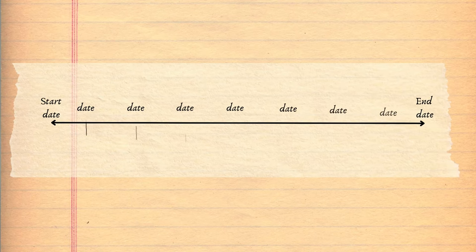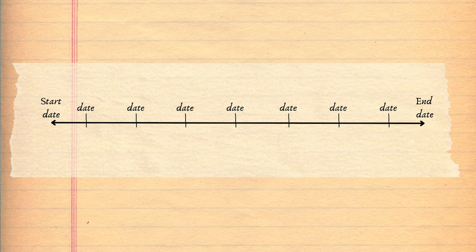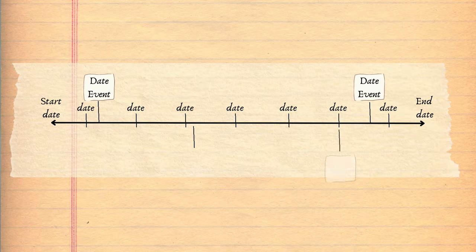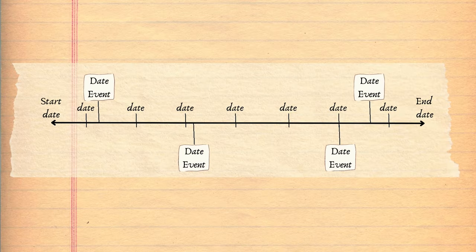The basics of timelines are that they read from left to right along a line and that they have markers spaced out evenly. These markers show us how much time has passed. Coming off the line are key labels, which show a date and describe the event that happened.